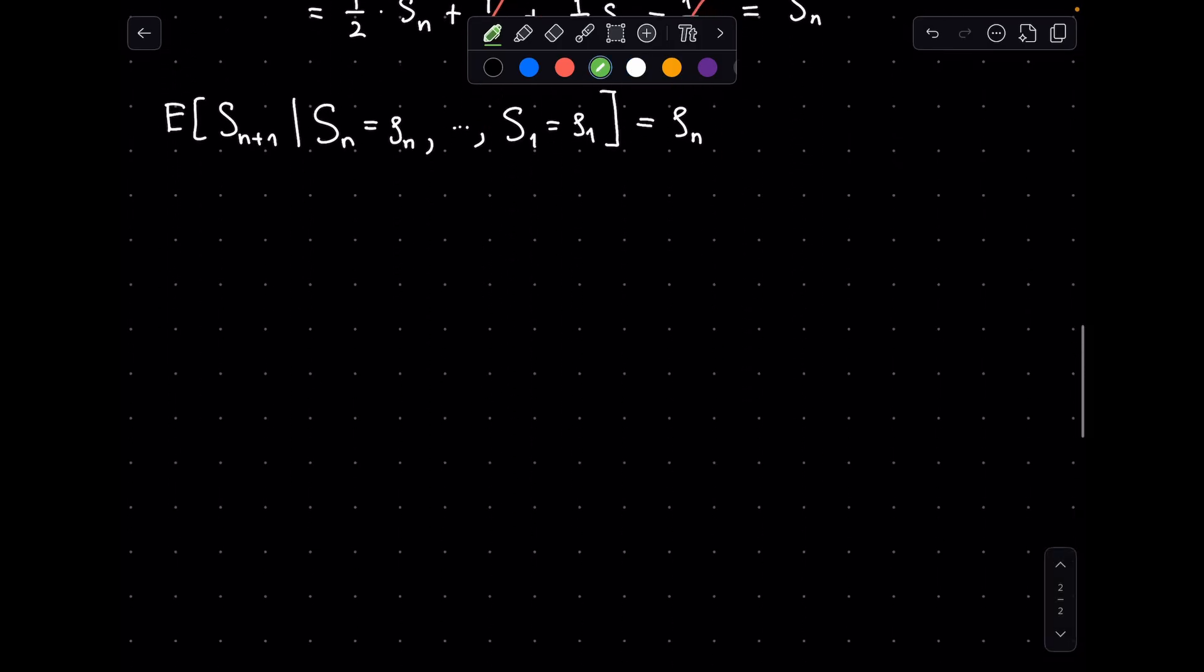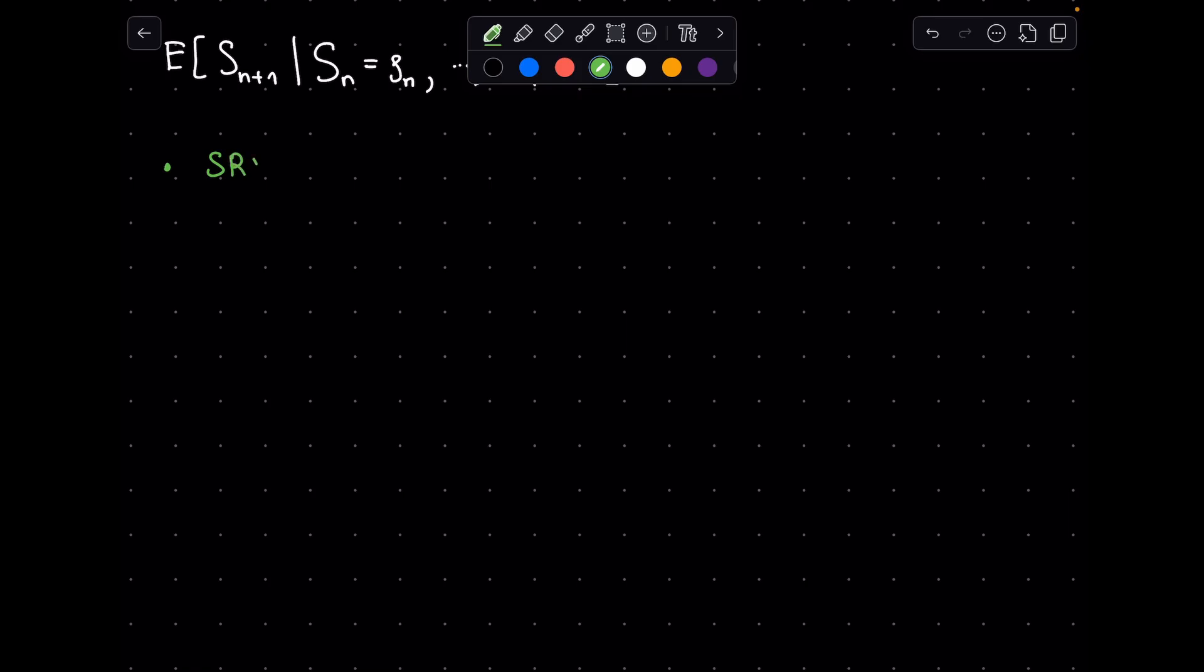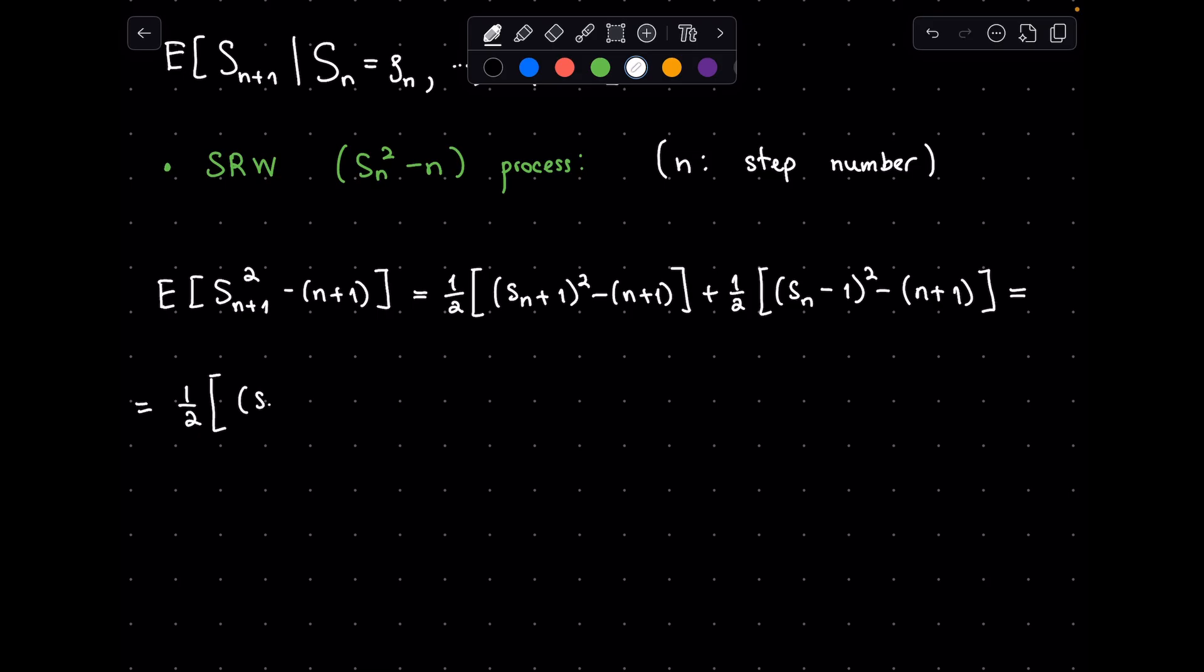There is another Martingale process in the framework of symmetric random walks. And it's the process of s_n squared minus n, where n is the step number. It turns out that this is a useful Martingale for many problems. Let's again show that this is a Martingale. Once again, we look at the expected value of the next step in the process, like in the previous case. After some simplifications, we see that it is again equal to s_n squared minus n, namely the current value. Therefore, we can again say that s_n squared minus n is a Martingale.